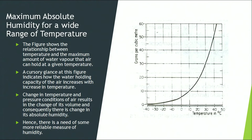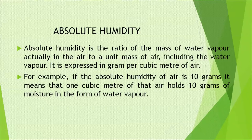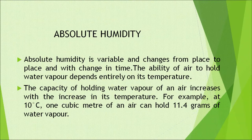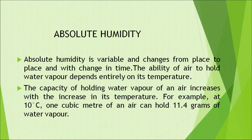Look at this diagram which shows maximum absolute humidity for a wide range of temperatures. Absolute humidity is the ratio of mass of water vapour actually in the air to a unit mass of air including the water vapour. It is expressed in grams per cubic metre of air. For example, if the absolute humidity of air is 10 grams, it means that 1 cubic metre of that air holds 10 grams of moisture in the form of water vapour. Absolute humidity is variable and changes from place to place and over time. The ability of air to hold water vapour depends entirely on its temperature. The capacity of air to hold water vapour increases with increase in temperature. For example, at 10 degrees Celsius, 1 cubic metre of air can hold 11.4 grams of water vapour.